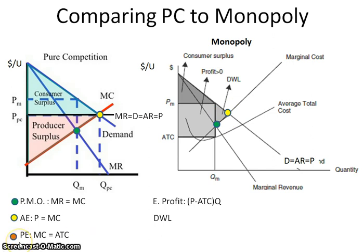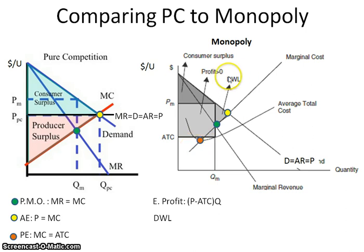Then you have productive efficiency, and that's producing goods as cheaply as possible. We don't have an ATC curve on our purely competitive graph, but if you try to locate it on your monopoly graph, you will see that productive efficiency in this case is over at this output. Your ATC could be way over here, so it doesn't have to be at a quantity that is less than where they're producing. The point is that a monopoly is never productively efficient.